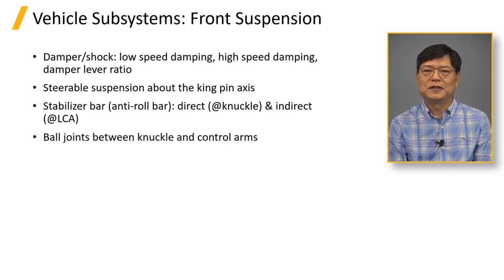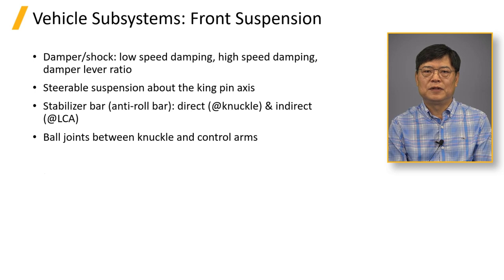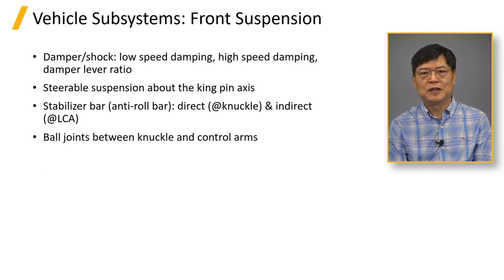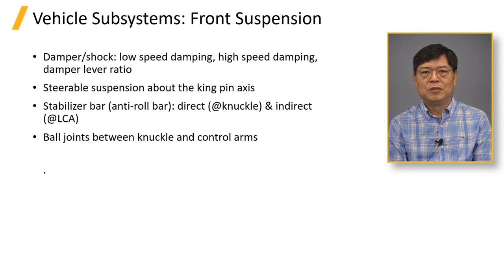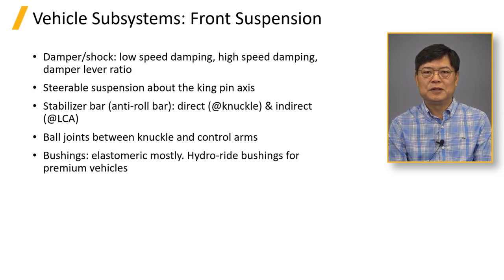Suspension components are attached to each other by ball joint, bolting, and bushings. Outboard side has stiff attachment of ball joint or high-stiffness bushings. Inboard attachments are compliant bushings. Bushings are mostly elastomeric, but hydro bushings and hydro mounts are used for premium vehicles.